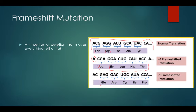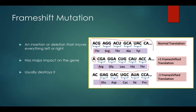Frame shift mutations are very, very bad because they can totally destroy a protein. As a result, frame shift mutations are almost always going to destroy an enzyme and make it no longer work. They can be really bad — sometimes they can be good — but normally a frame shift mutation causes so much change that the body just never recovers from it. It usually kills the cell.